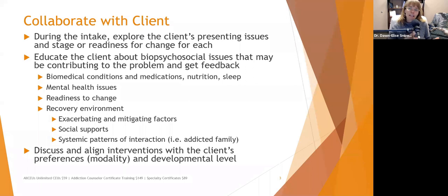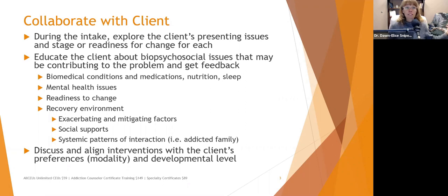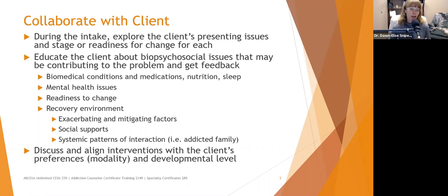We also want to identify mitigating factors — what things in the environment help you feel better? Do you love your dog? Do you have a really supportive spouse? What are the person's social supports like? This is going to help them start identifying some strengths that they can pull on.